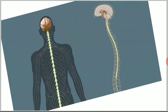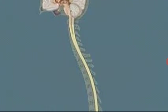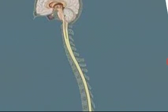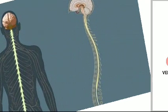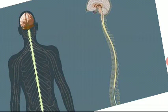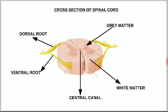Let us see the means of protection of the spinal cord. The spinal cord is protected in a bony structure called the vertebral column. You can see the vertebral column — the spinal cord sits inside it and is well protected. Additionally, as in the brain, there are meninges here as well to protect the spinal cord.